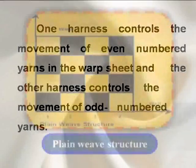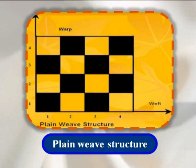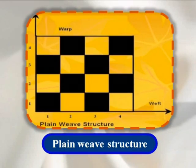For representing plain weave, warp number one goes above pick number one, so marked cross, below pick number two, so left blank, above pick number three, marked cross and below pick number four, left blank and so on.